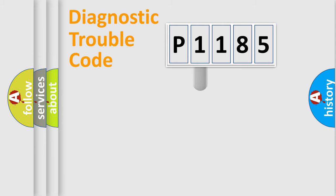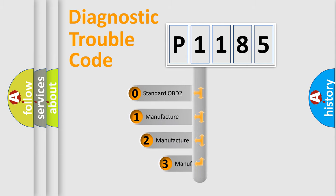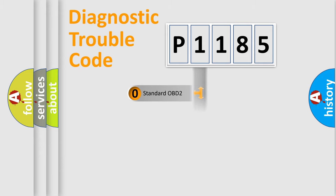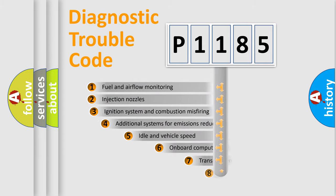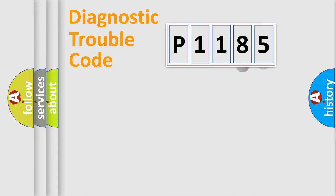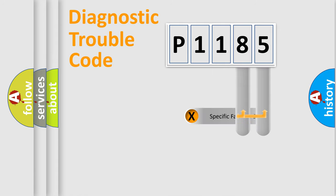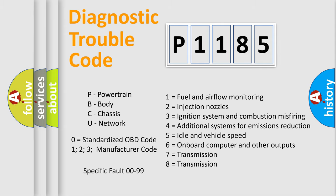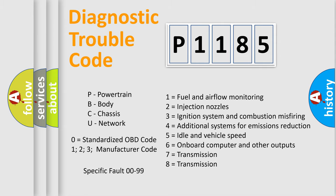This distribution is defined in the first character of the code. If the second character is expressed as zero, it is a standardized error. In the case of numbers 1, 2, or 3, it is a manufacturer-specific error. The third character specifies a subset of errors. This distribution is valid only for the standardized DTC code, and only the last two characters define the specific fault of the group. This division applies only when the second character is zero.